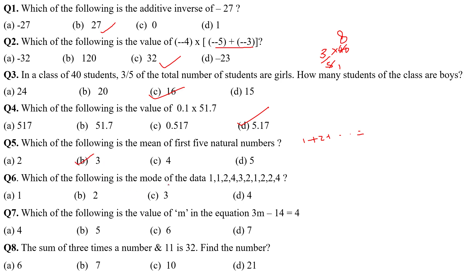Which of the following is the mode? Mode. Maximum number of frequency occur in a data. So, I think 2, 1 time, 2 time, 3 time, 4 time. Yes, 2 is the mode of the given data. Which of the following is the value of M in this equation? In this equation, 3M is equal to 14 plus 4, 18, then M is equal to 6. Yeah, C is the correct option.